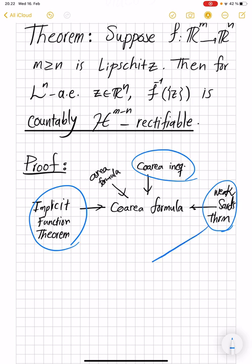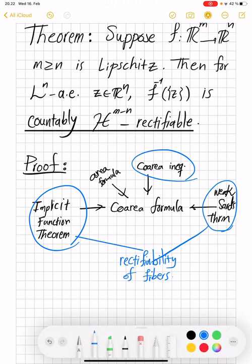So from these three follows this rectifiability result of fibers of this map. Okay, as you will see in a second in the proof. So in that sense, this theorem is independent and also simpler to prove.